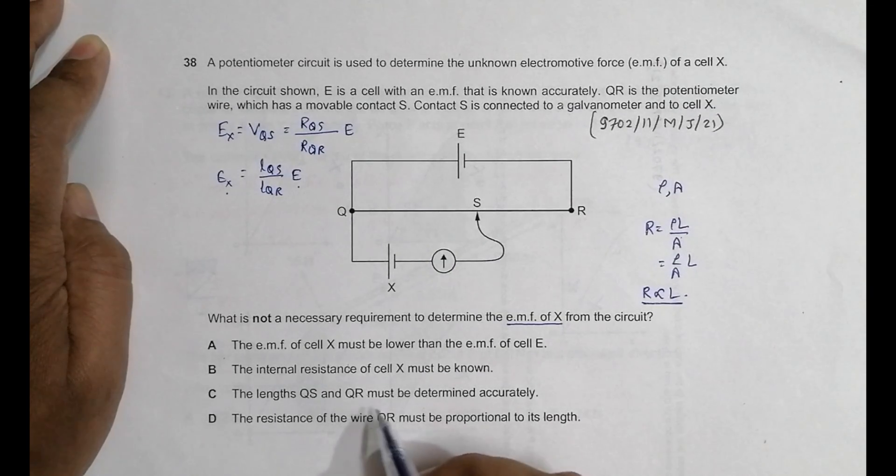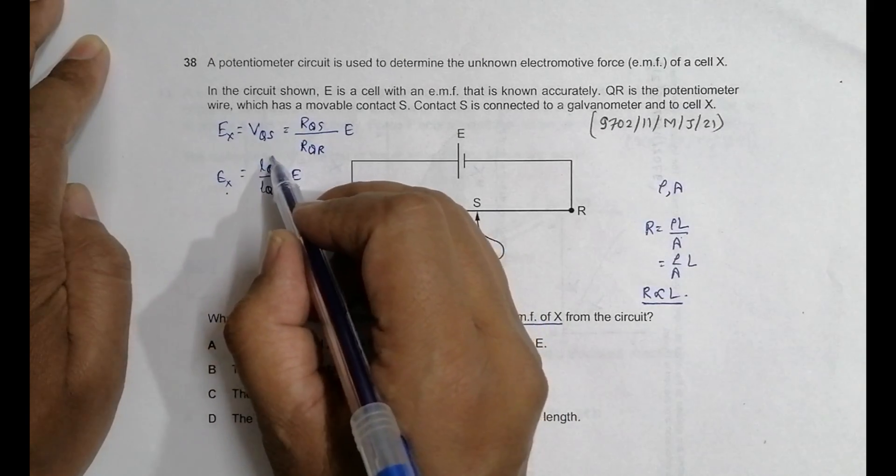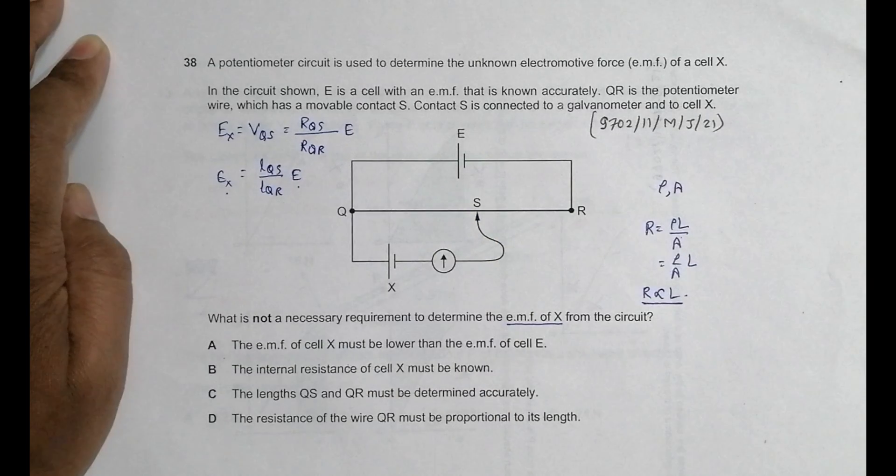Then, the lengths QS and QR must be determined accurately. It is also true because the accurate dimension gives us the value of this EX.